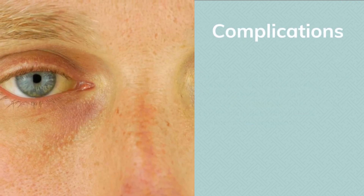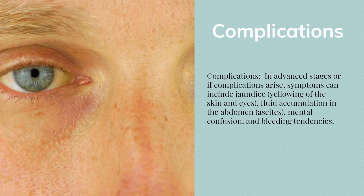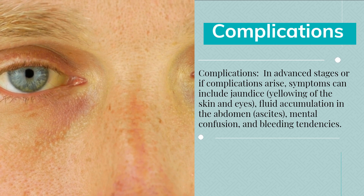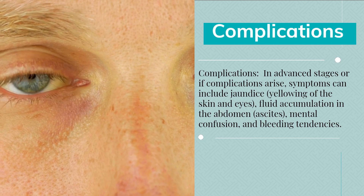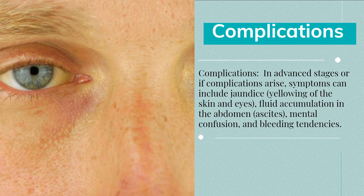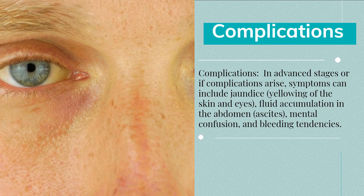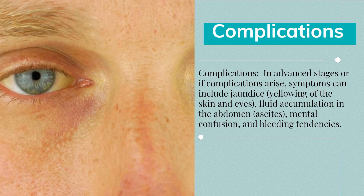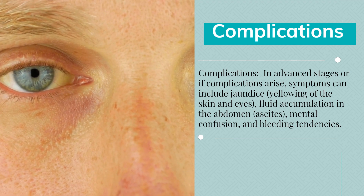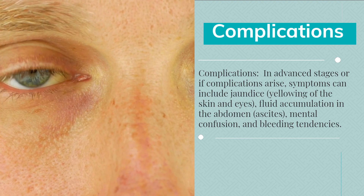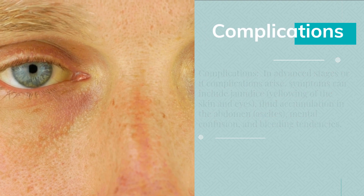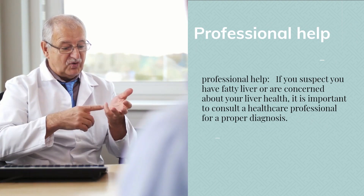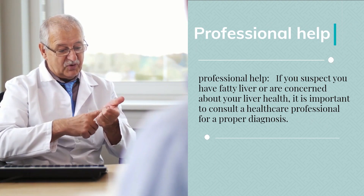In advanced stages or if complications arise, symptoms can include jaundice — yellowing of the skin and eyes — fluid accumulation in the abdomen (ascites), mental confusion, and bleeding tendencies.